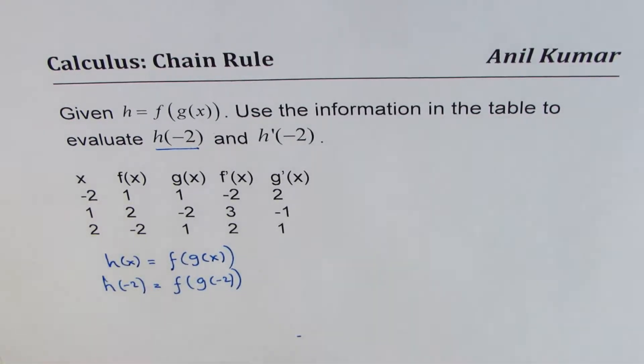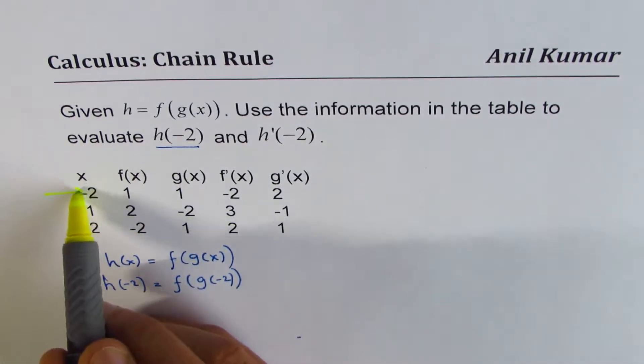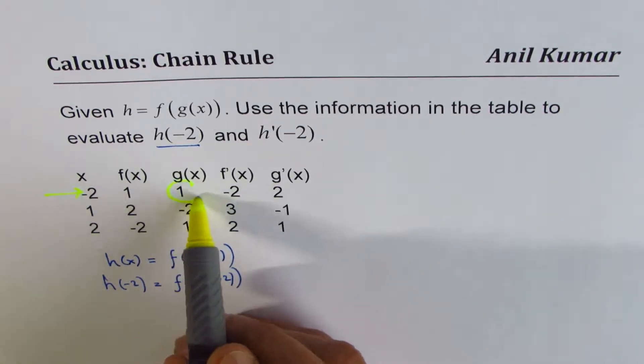Now, from the table, you can read the value of g of minus 2. That is minus 2. g of minus 2 is 1.